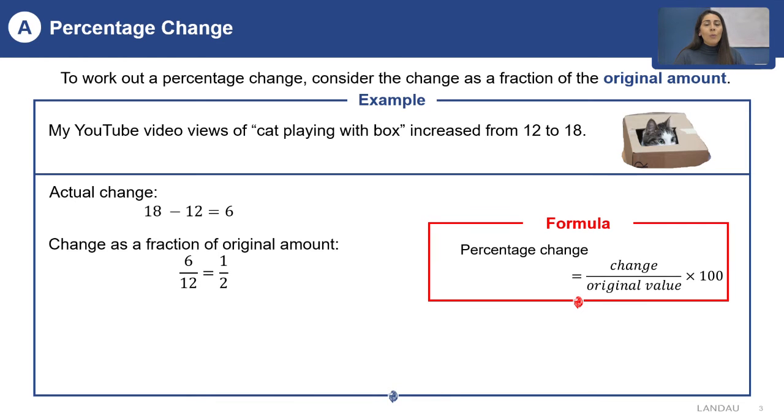In order to do so, we will have to multiply the fraction by 100. Therefore, 1 over 2 multiplied by 100 is 50%.